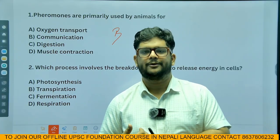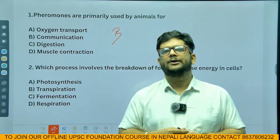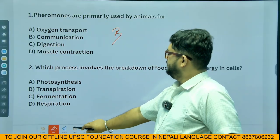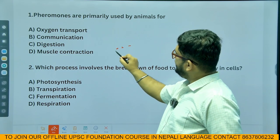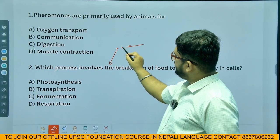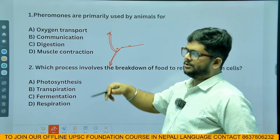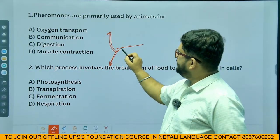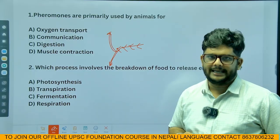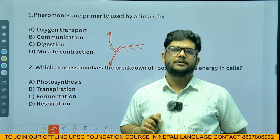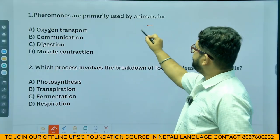Another example is ants. Ants use pheromones to communicate with each other and to travel. They are able to communicate and travel using these chemical signals.